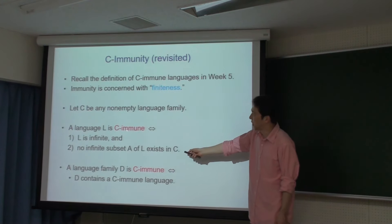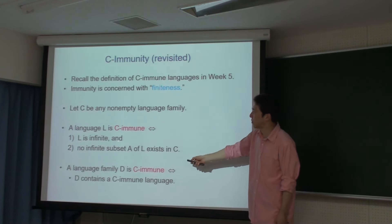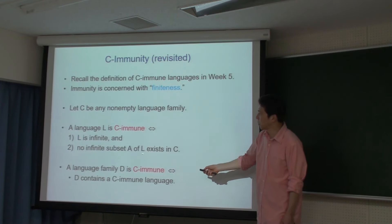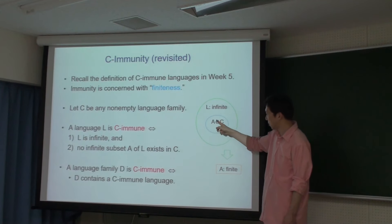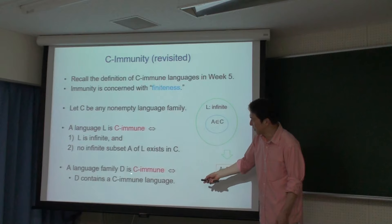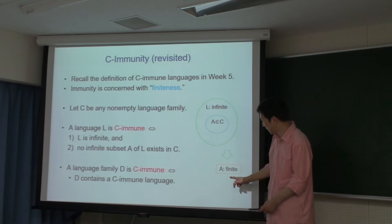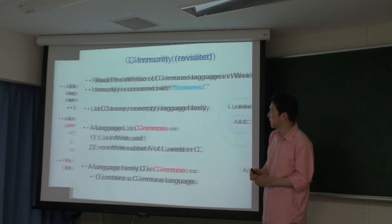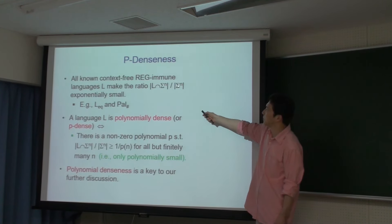次の話題はimmunityです。5週目でやった復習として、C-immuneとはLが無限集合で、Lの中にあってCに入っているものを取ってくると必ず有限集合になる、というものです。Cファミリーがイミューンというのは、そのような条件を満たす言語がCの中にあるということです。つまりimmunityは有限集合についての話です。Regular immuneという言語がいくつかあります。